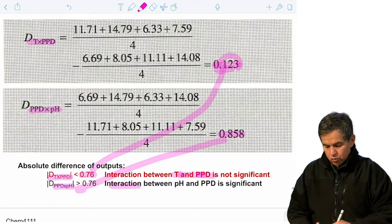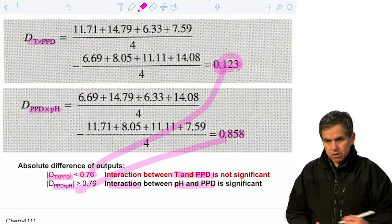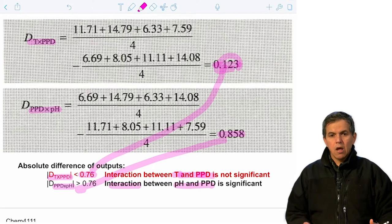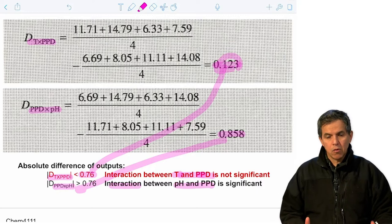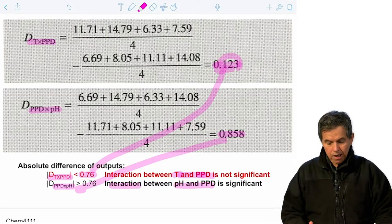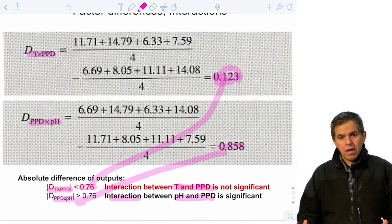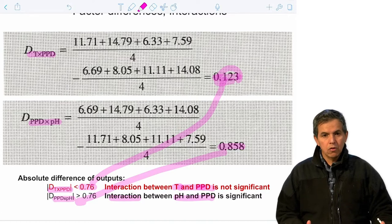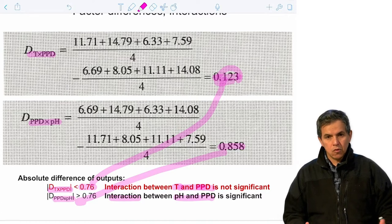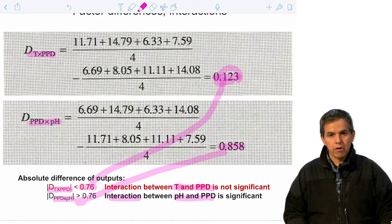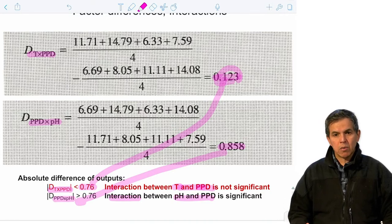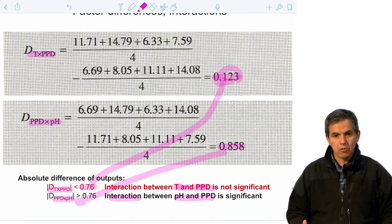There is an interaction between pH and PPD. In other words, when optimizing these conditions, we need to be careful about selecting the parameters so that we minimize this potential interference. In summary, we can use a 2 to the k table — such as a 2 to the third table — to investigate multiple parameters and determine which ones are relevant to the optimization we are trying to pursue.